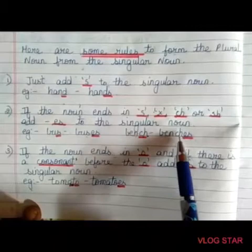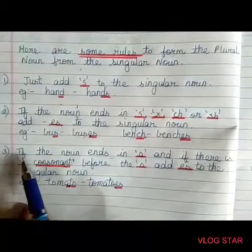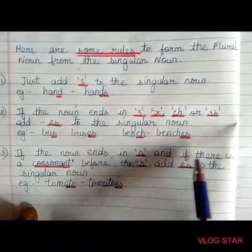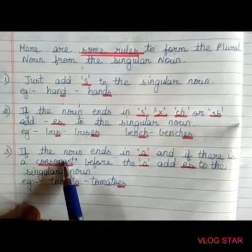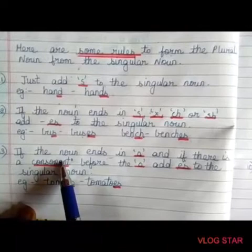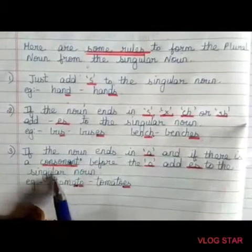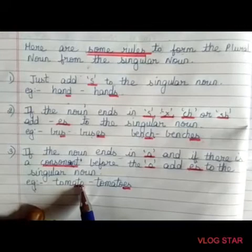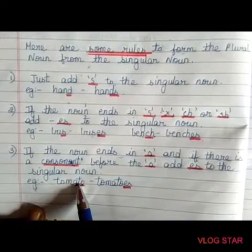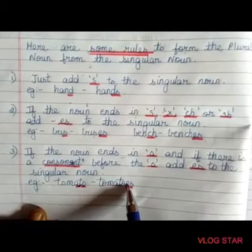The third rule: if the noun ends in 'o' and if there is a consonant before the 'o' — students, you all know that there are five vowels and the rest of the alphabets are consonants, for example b, d, f — if there is a consonant before the 'o', we will add 'es' to the singular noun. Example: tomato — the word ends with 'o' and before 'o' we have a consonant; 't' is a consonant, so we add 'es' to turn it into a plural form.